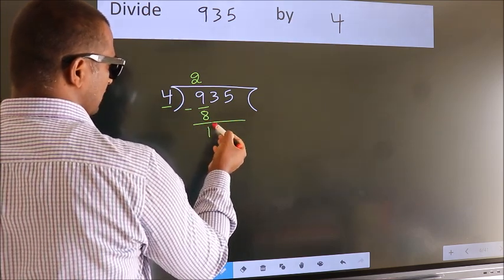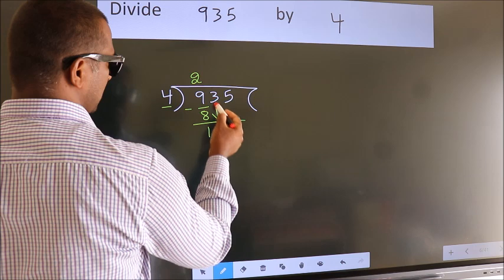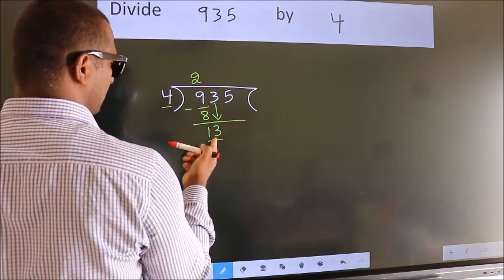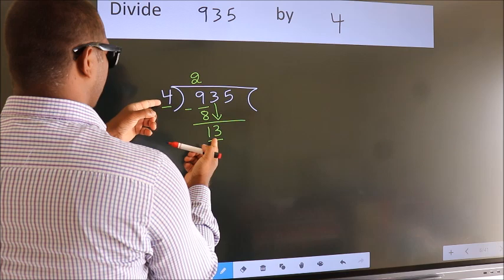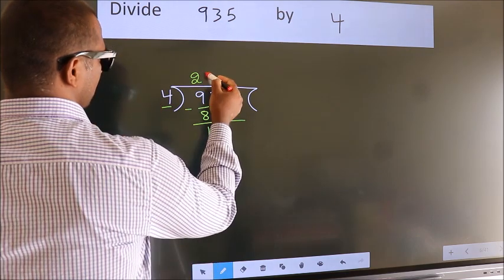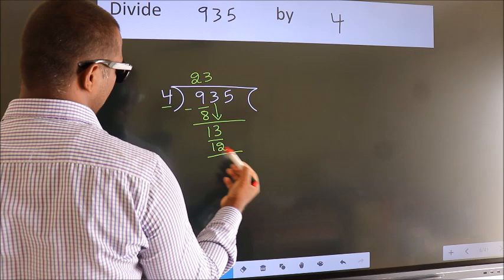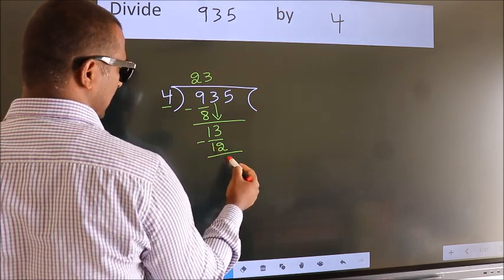After this, bring down the beside number. So 3 down, so 13. A number close to 13 in 4 table is 4 3s 12. Now we subtract. We get 1.